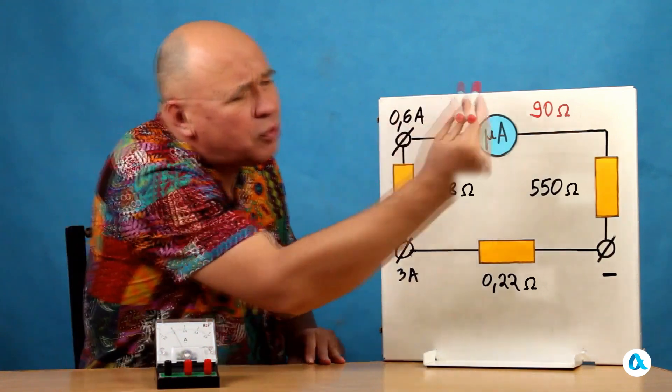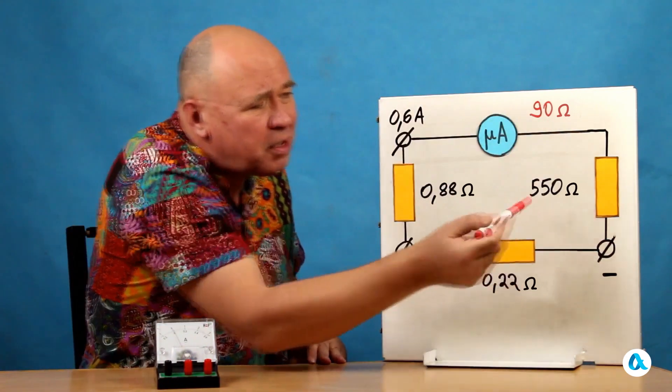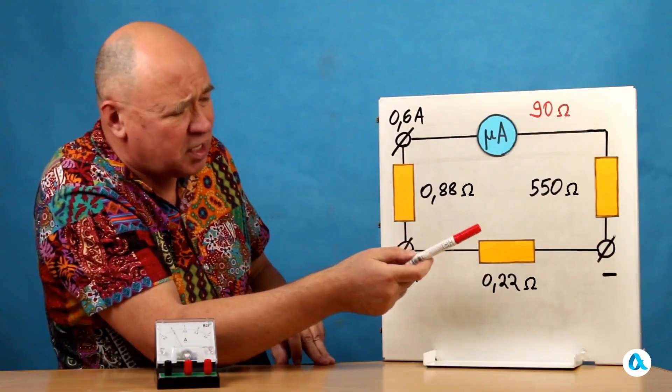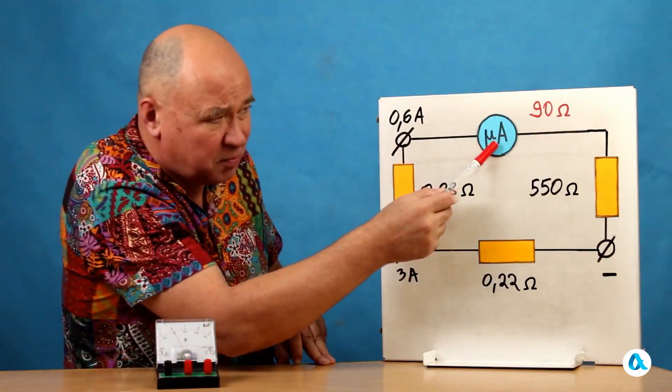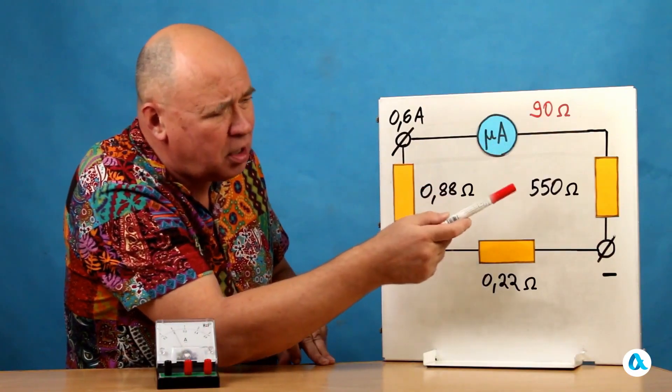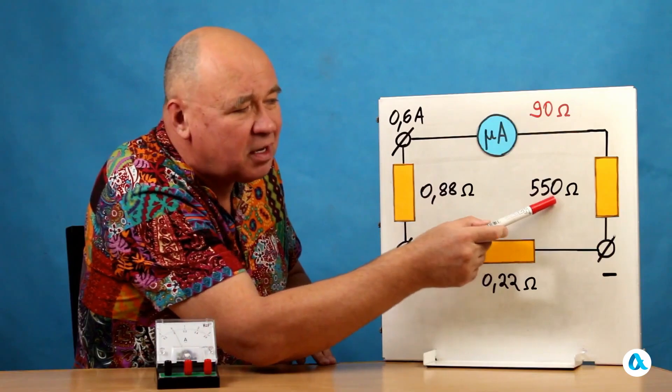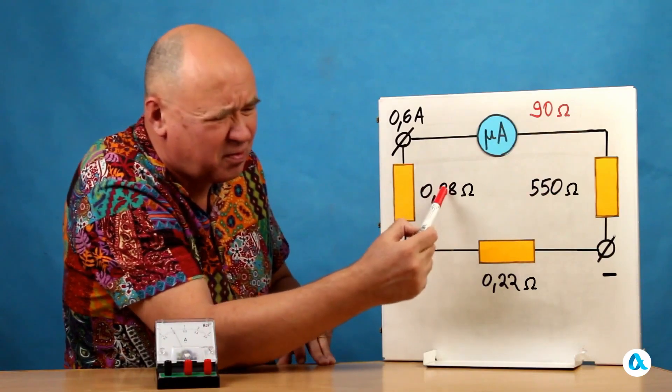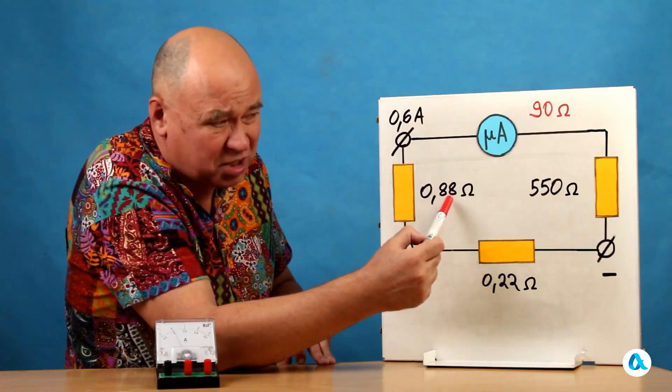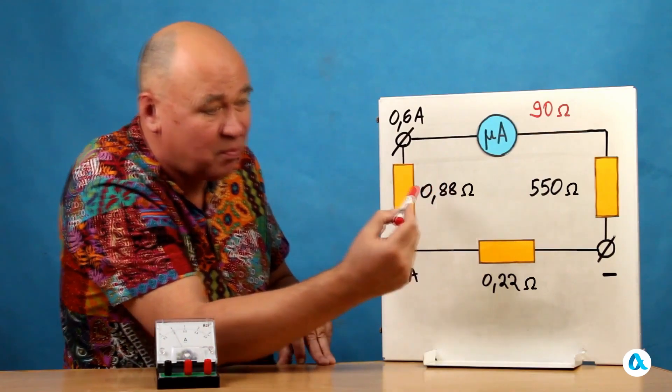Everything else is the second branch of the circuit. And here, in this branch, there is the micro-ammeter itself. And also, a significant resistor of 550 ohms. This second one, at 0.088, is much smaller. So, we can ignore it for now.